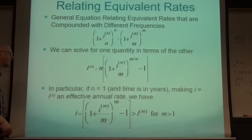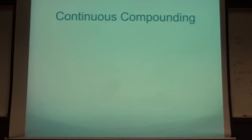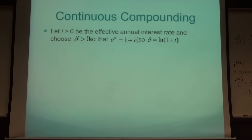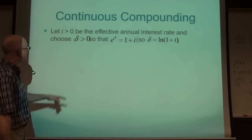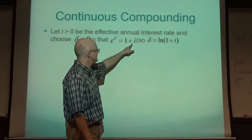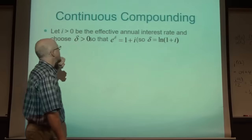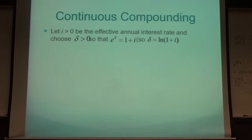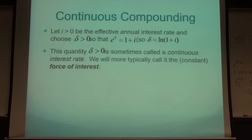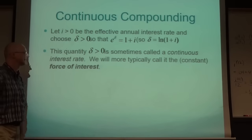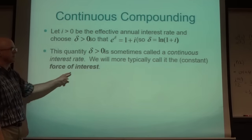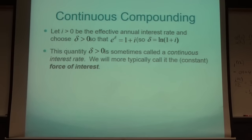There's also continuous compounding, involving the number e ≈ 2.71828. Let i be the effective annual interest rate and choose a number delta so that e^delta = 1+i - in other words, delta is the natural logarithm of 1+i. When you find such a number delta, it's called the continuous interest rate, or more typically in actuarial science, the force of interest. With compound interest, it is constant, though it can vary in other situations.